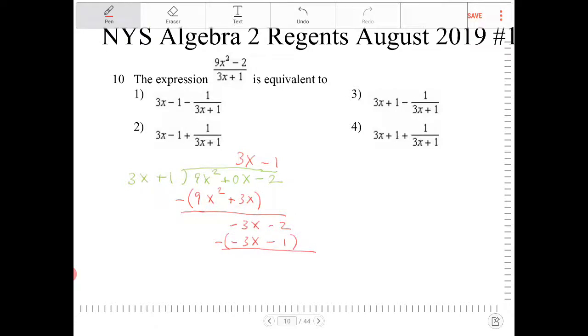And if I perform the necessary subtraction, negative 3x minus negative 3x—that's 0. Negative 2 minus negative 1—that's negative 1. So this fraction, 9x squared minus 2 over 3x plus 1, is equivalent to 3x minus 1 plus negative 1 over 3x plus 1.